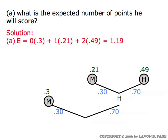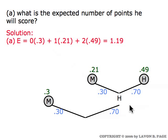For the expected value computation, we take all the possibilities: zero, one, or two free throws made. Hitting none has probability 0.3, hitting his first and missing his second has probability 0.21, and hitting both has probability 0.49. Multiply each possibility times its probability. The expected value comes out to be 1.19, which simply says that on average, when Mark goes to the free throw line to shoot a one-and-one, he'll score 1.19 points.